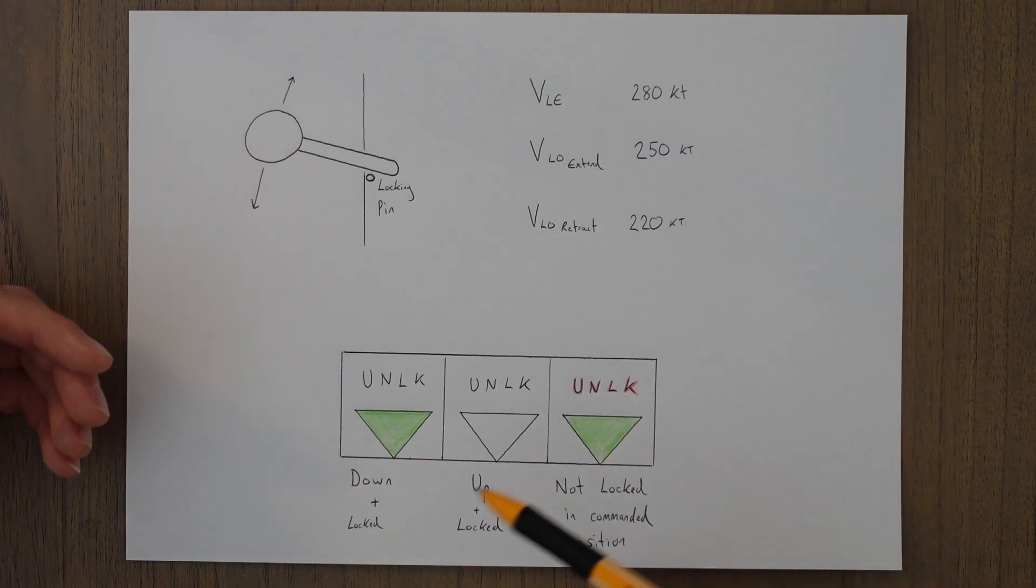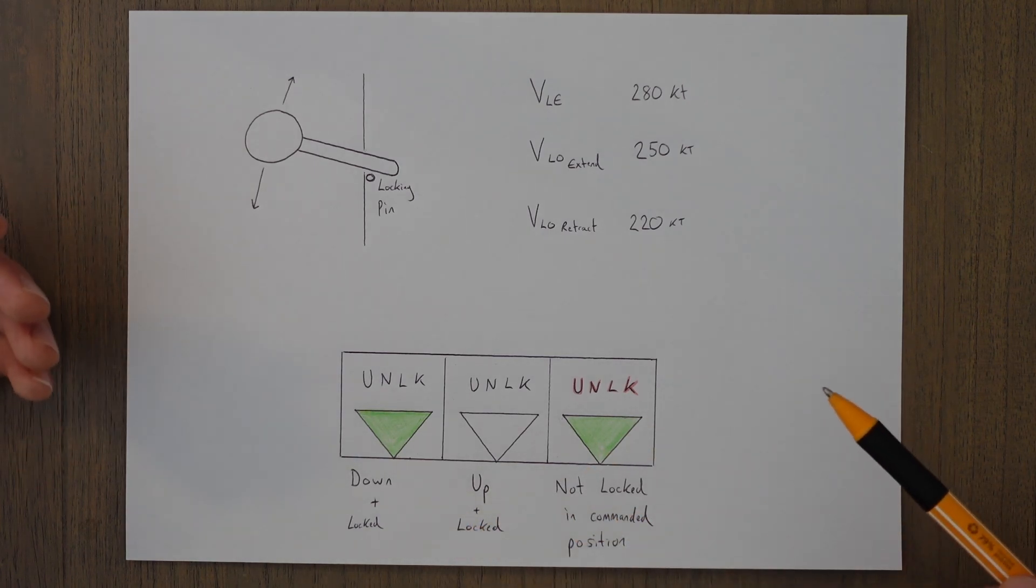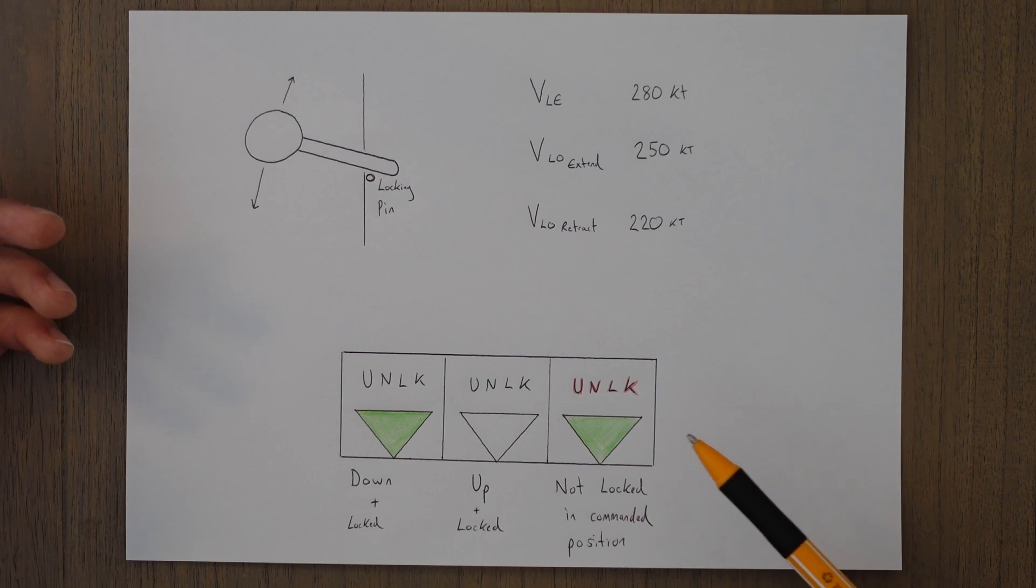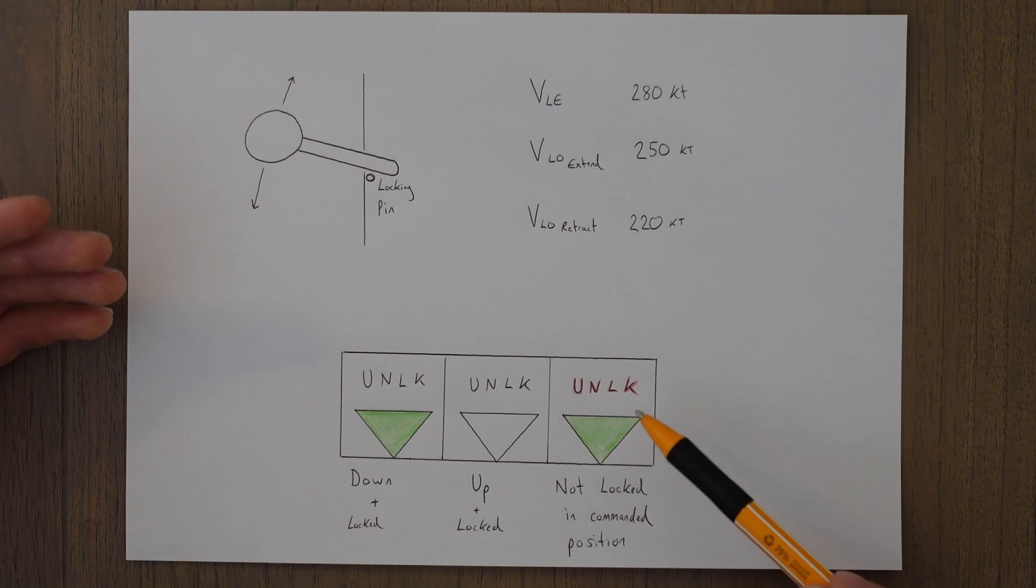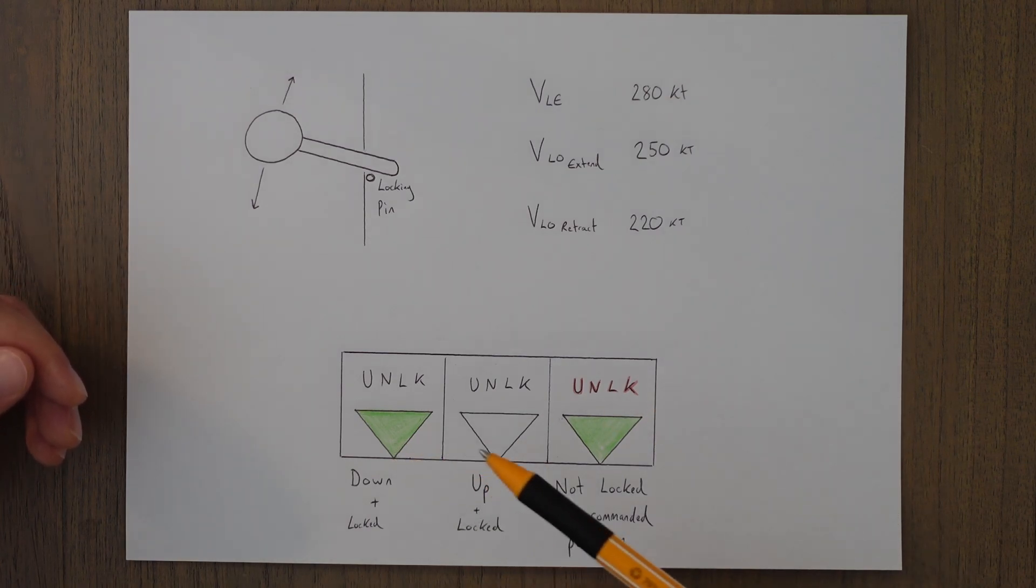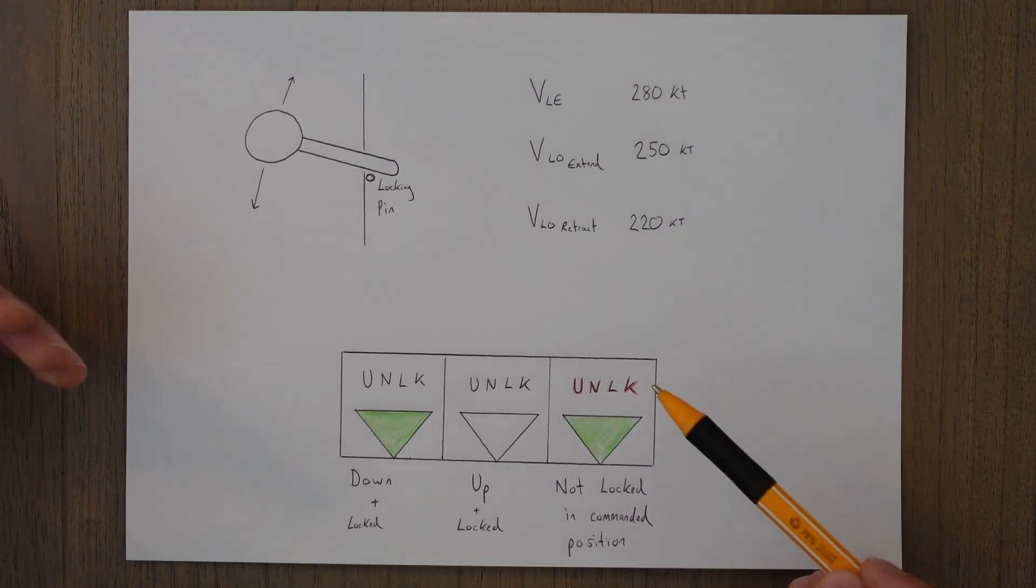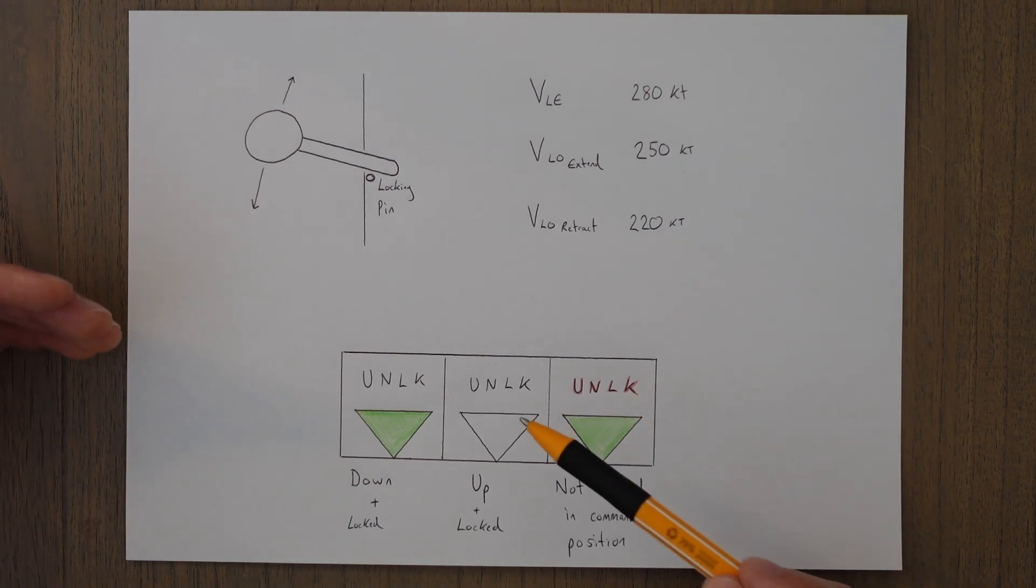So if we're coming into land and we didn't have three greens displayed but instead had this arrangement where we've got one green, one unilluminated, and one red and green, then that means we've got one gear that's down, one gear that's up, and one gear that's down but not confirmed locked.